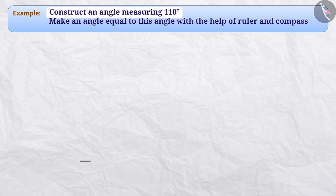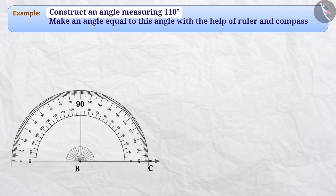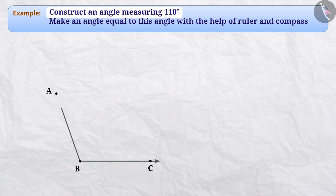First, we will draw a ray of any measurement and name it BC. Here, we will use the protractor. We will place the protractor on ray BC so that the centre of the protractor is on point B and the zero edge is along ray BC. As we have to measure 110 degrees, we will start from zero which is close to point C, mark a point in front of 110 degrees and name it A. Then we will join point A and point B. This gives us angle ABC of measurement 110 degrees.